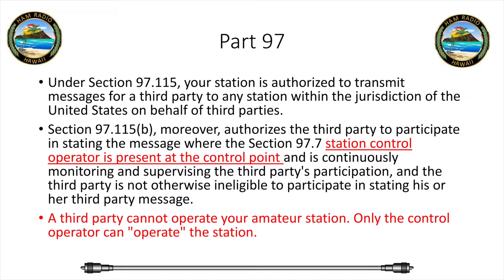Under 97.115, your station is authorized to transmit messages for a third party to any station within the jurisdiction of the United States. Also under 97.7, the station control operator must be present at the control point, and you're always monitoring and supervising the third party's participation. A third party cannot operate your amateur station — only the control operator can — but they can push the talk button and hold the microphone while you're standing there controlling it.